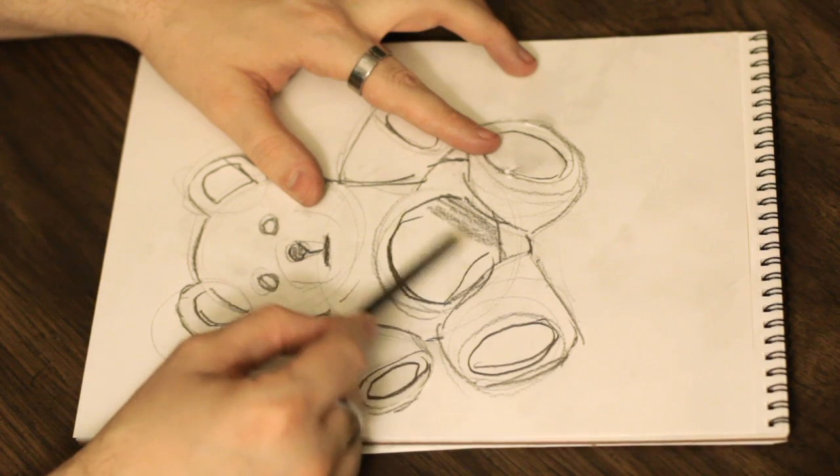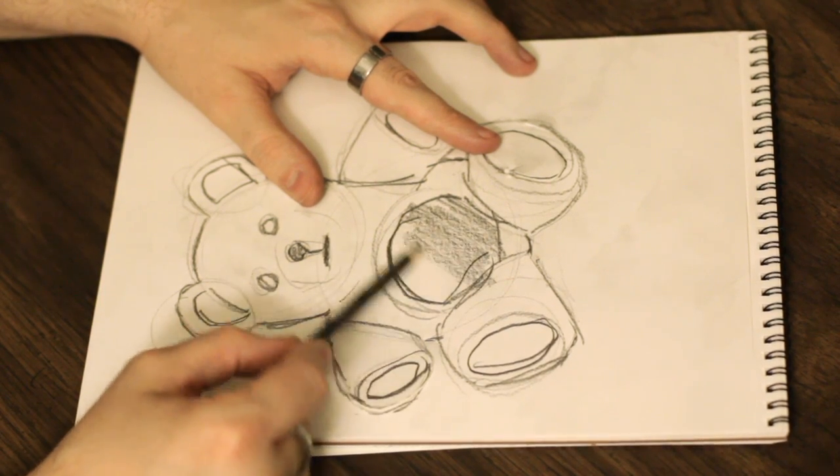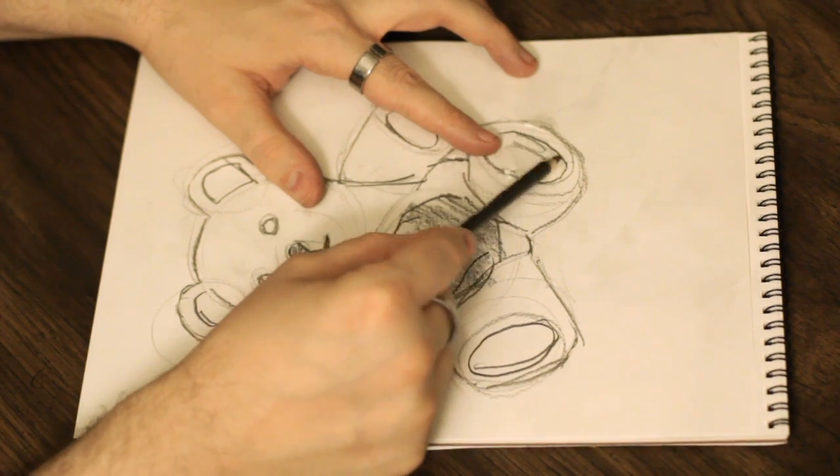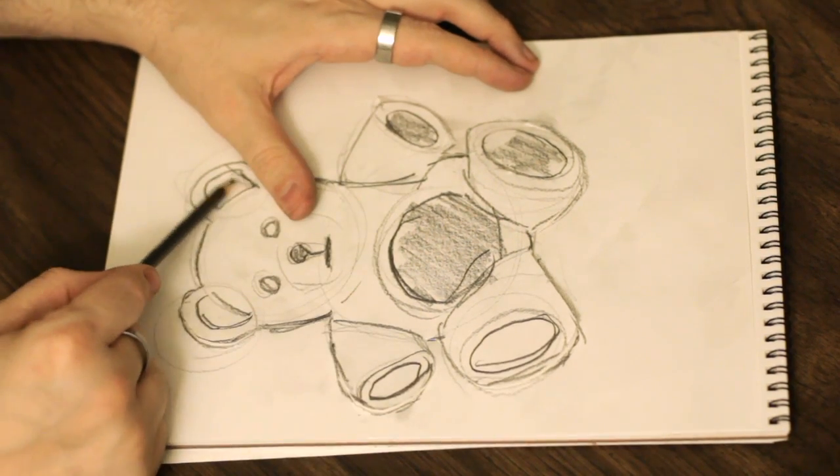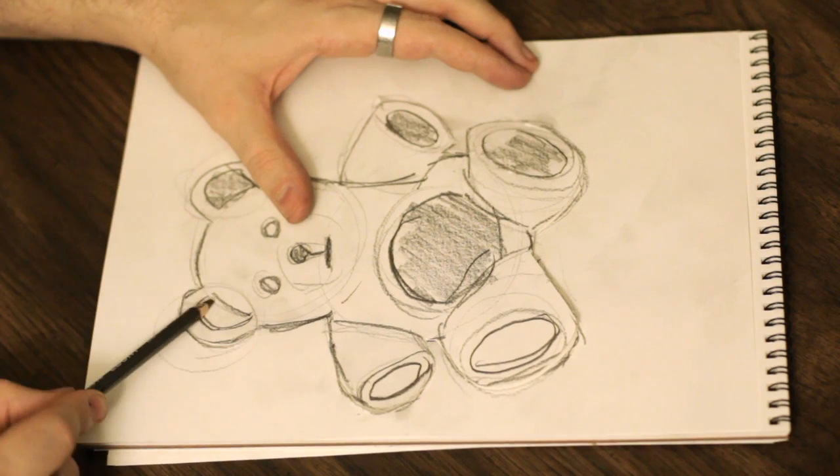So this right here is one of the shapes I'm talking about, the belly circle, and we've got the circles here on his arms and legs that signify the pads on his hands and feet. We have his ears.